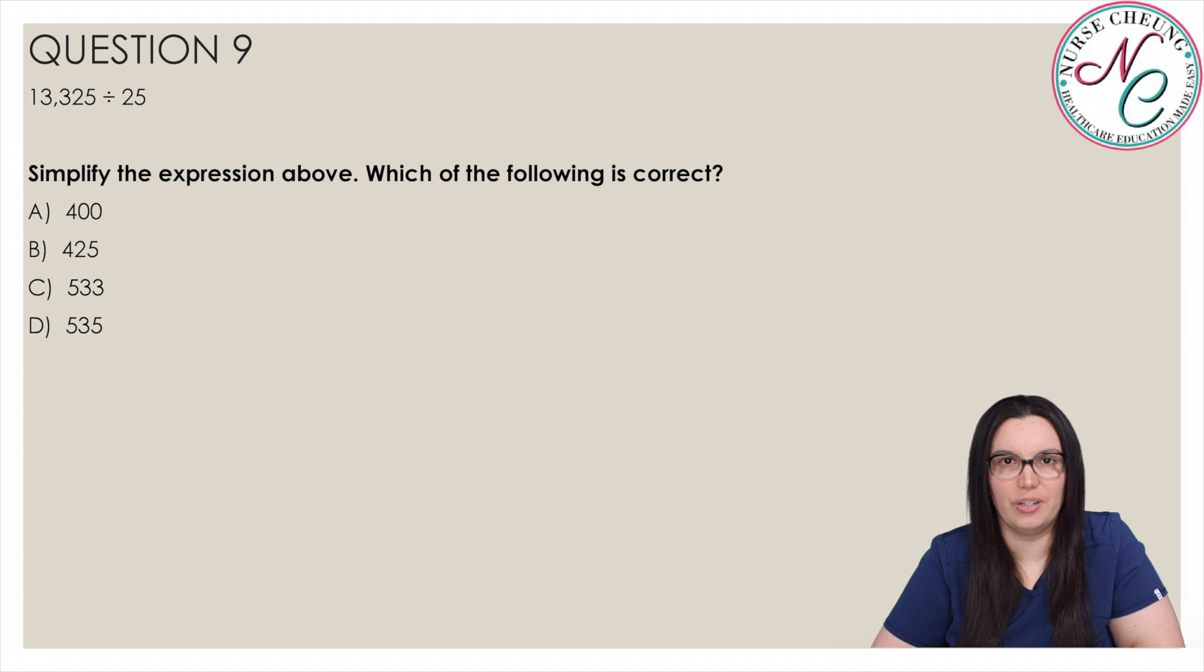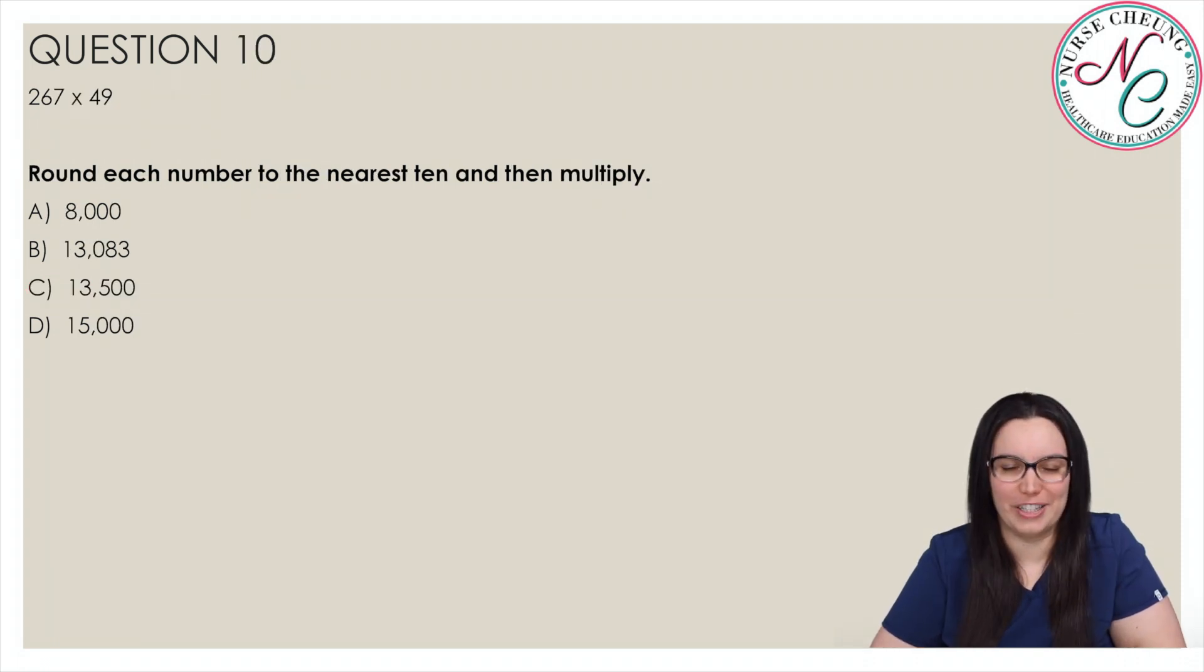13,325 divided by 25. Simplify the expression above. Which of the following is correct? Is it A, 400, B, 425, C, 533, D, 535? And the correct answer is C, 533. To check your work, multiply 25 by 533. The result should be the original number 13,325, making 533 the correct answer. Moving on to our last question.